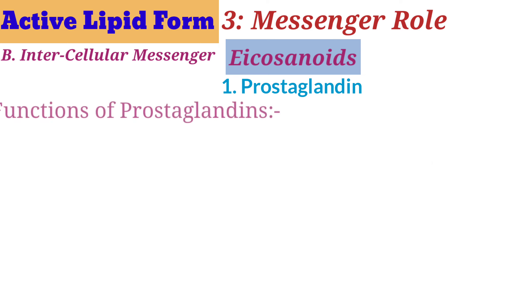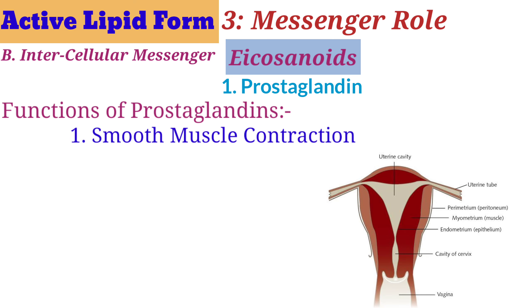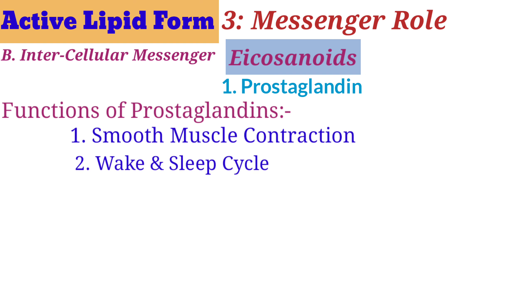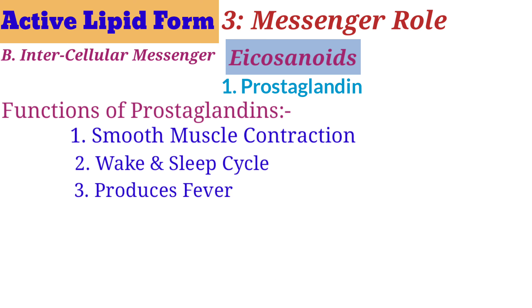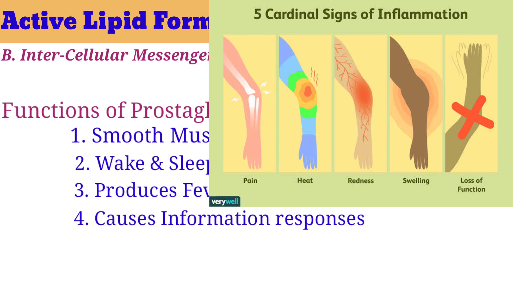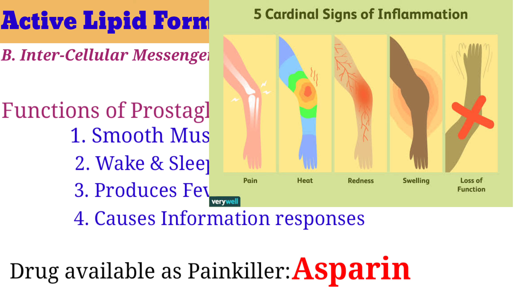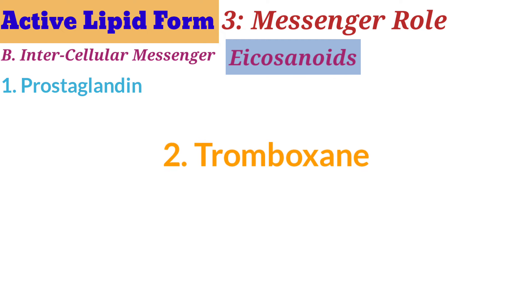Prostaglandins work in the smooth muscle of the uterus for contraction during the menstrual cycle in females. They also regulate the wake and sleep cycle in humans and many other animals, produce fever by elevating temperature, and are responsible for causing inflammation and pain. The drug aspirin is used to inhibit the production of prostaglandins — it is known as a pain killer drug.